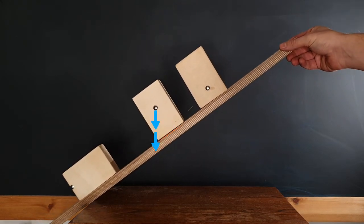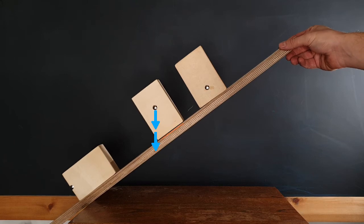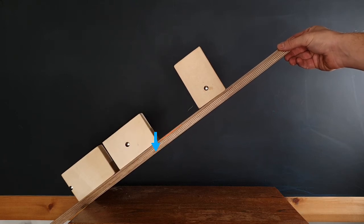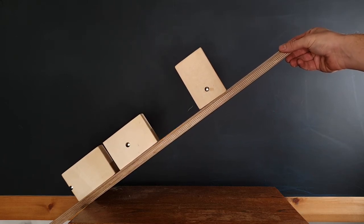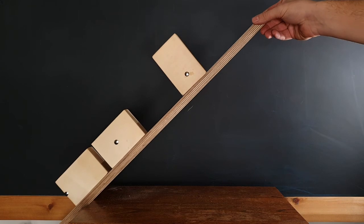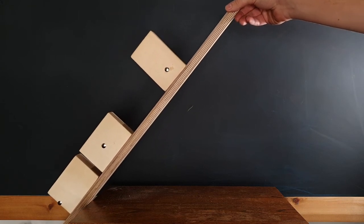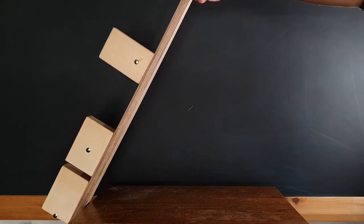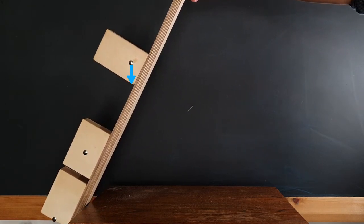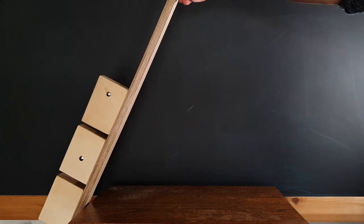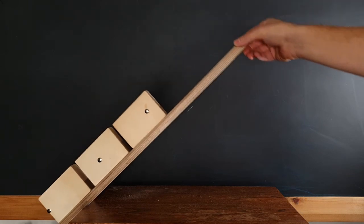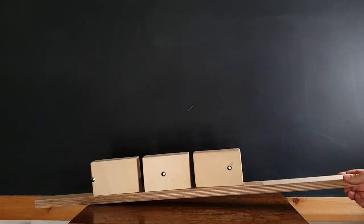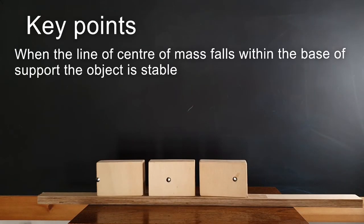We can see this for the other two boxes — once the line of center of mass falls outside the base of support, the object topples. Even the final box, which has a very low center of mass and is stable for a long time, eventually reaches a point where its line of center of mass falls outside the base of support and it too will topple.